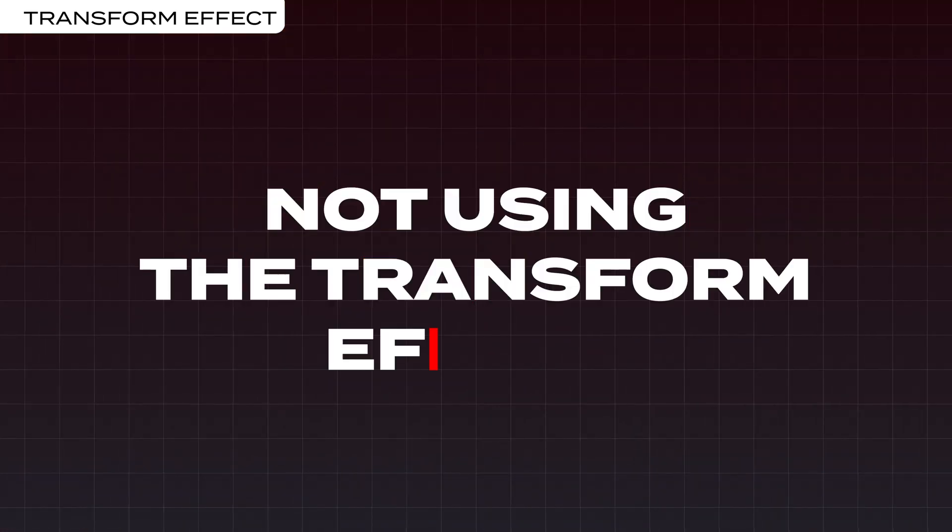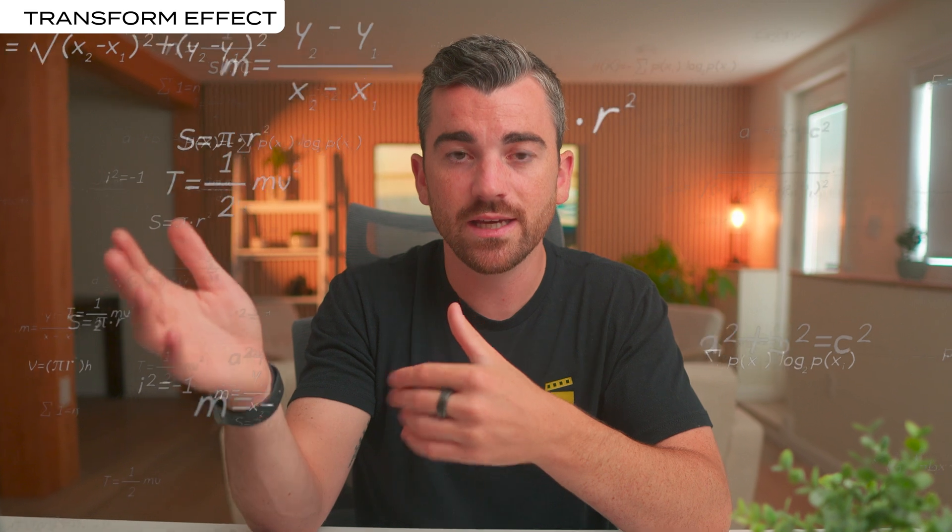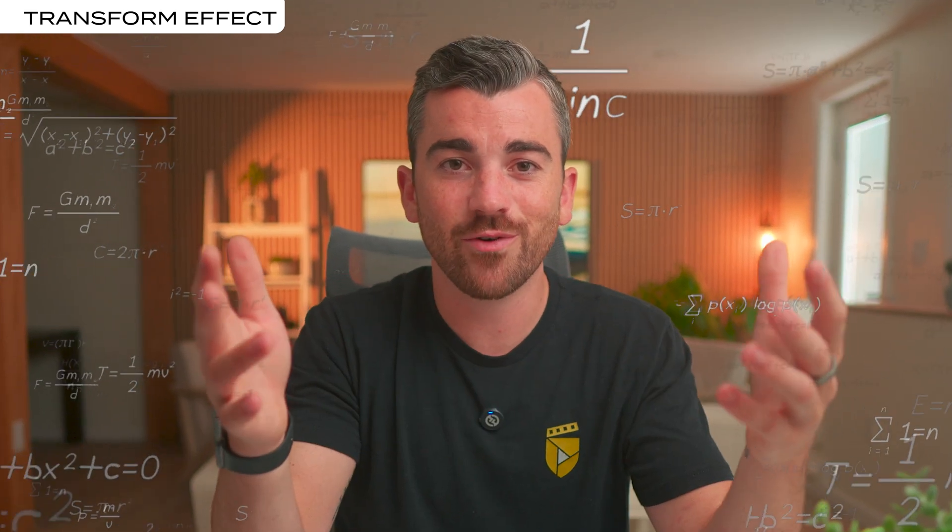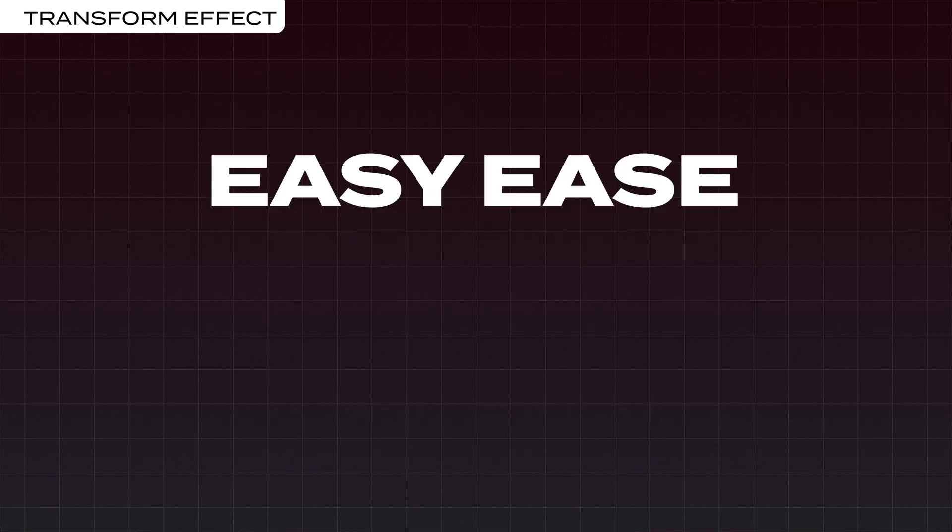Mistake number three is something that if I had learned earlier, I know for a fact that I'd have less gray hair: not using the Transform effect. If you've ever watched one of my videos, it's pretty easy to tell that I really love animated graphics and text. Back in the day, I would do all of this using After Effects — I would either export a small section of my video or use Dynamic Link, import it to After Effects, do a complex little graphic thing, export it from After Effects, and then re-import it back to Premiere Pro. This is where the gray hair comes from. It was exhausting. I thought it was the only way to access two things that are absolutely essential if you want your edits to look pro: Easy Ease and Motion Blur.